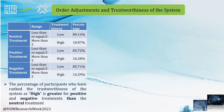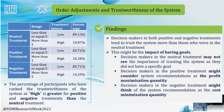When it comes to order adjustments and trustworthiness of the system analysis, our results illustrate that the percentage of participants who ranked the trustworthiness of the system as high is greater for positive and negative treatments than for the neutral treatment. We found that decision makers in both positive and negative treatment tend to trust the system more than those in the neutral treatment. This might be the impact of having goals. Since decision makers in the neutral treatment did not have a specific goal, they might not see the importance of trusting the system.